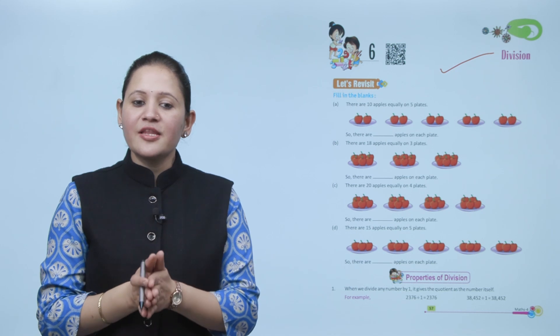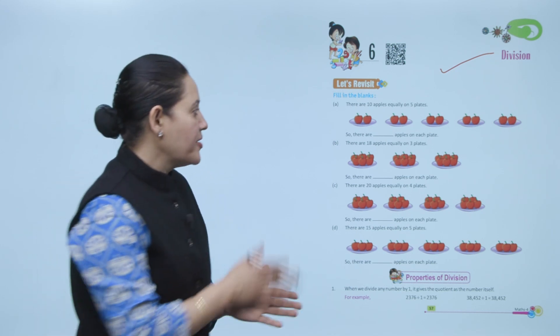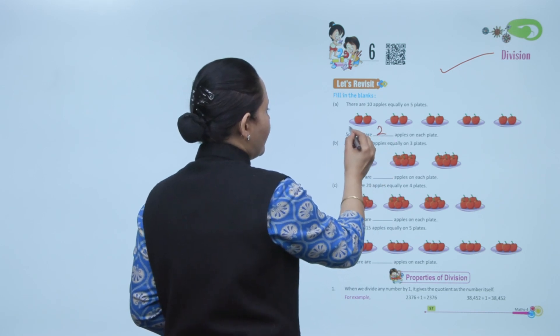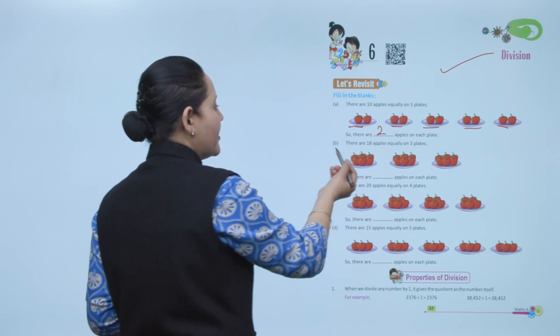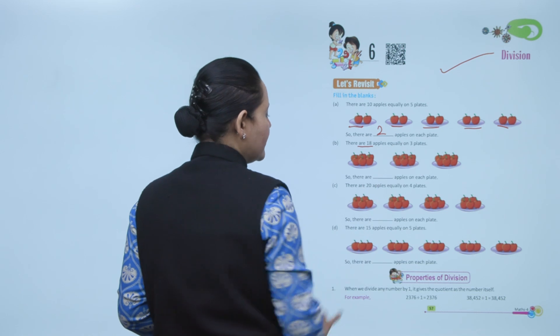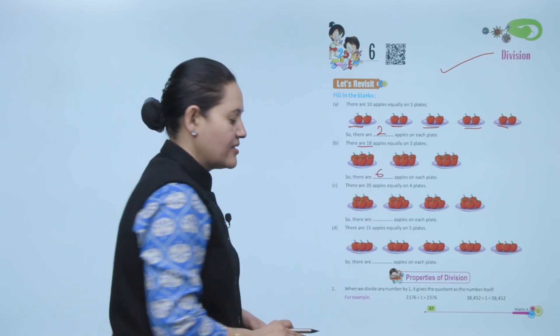Let's revisit fill in the blanks. There are 10 apples equally on 5 plates, which means there are 2 apples on each plate. Similarly, there are 18 apples equally on 3 plates — 6 apples each. That means 18 divided by 3 equals 6.